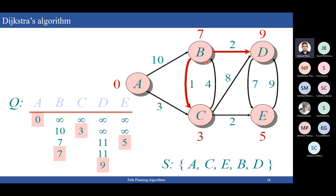So first we need to create a visibility graph, then do a graph search using Dijkstra's algorithm to get the optimal cost for each node. Then we know the minimum cost from the given start position and can easily define which path to take. This is Dijkstra's algorithm.